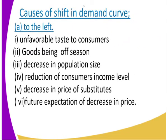What causes the shift in the demand curve towards the left hand side — that is towards a decrease in demand? Number one: unfavorable tastes to consumers. Number two: goods being off season. Number three: decrease in population size. Number four: reduction of consumers' income level. Number five: decrease in price of substitutes. Number six: future expectation of a decrease in price.